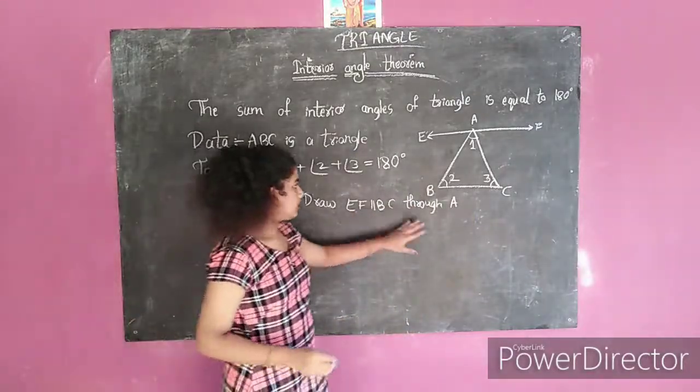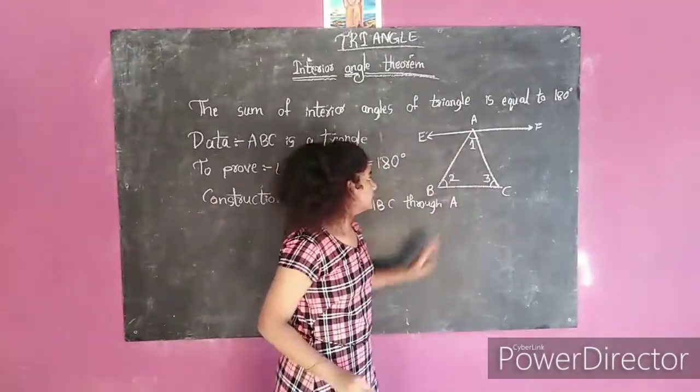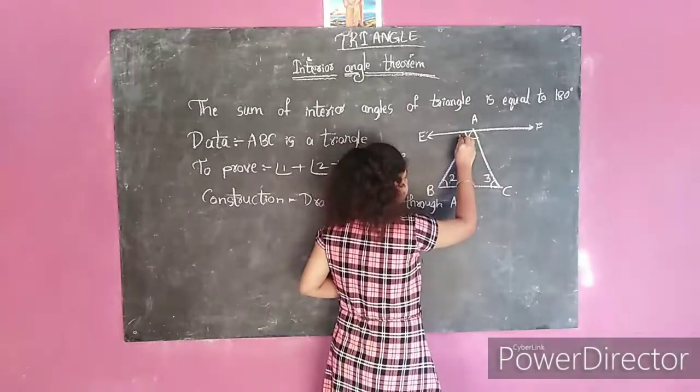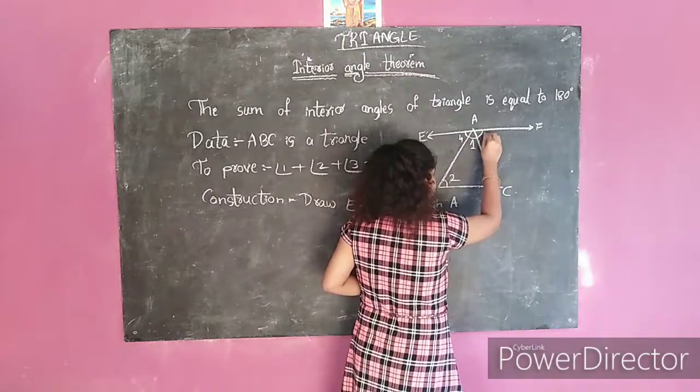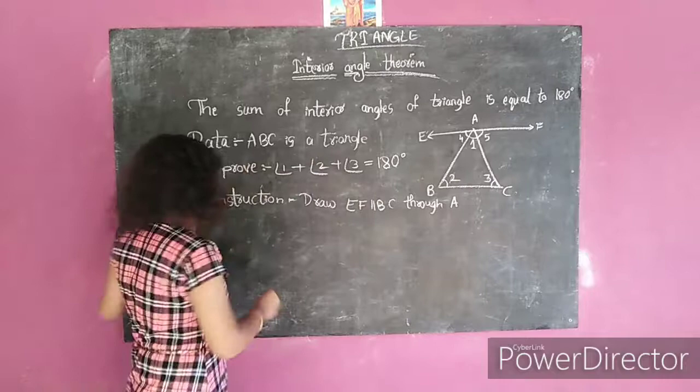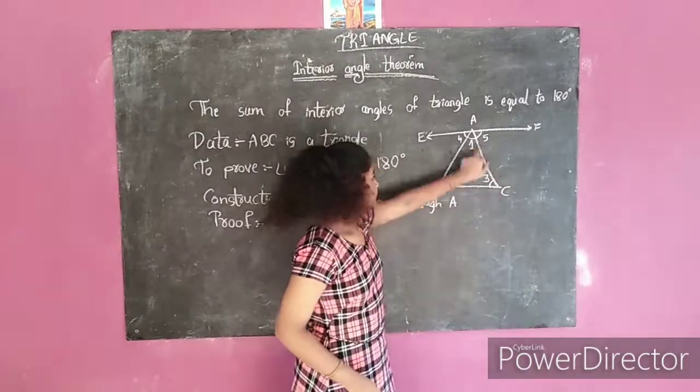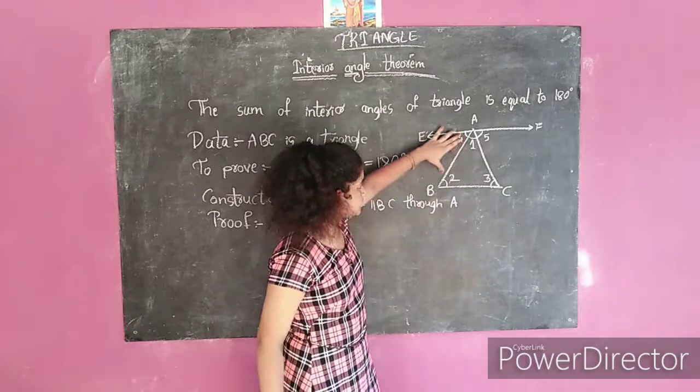Draw EF parallel to BC means these two lines are parallel. We will take this angle as angle 4 and this angle as angle 5. Now we will start the proof. If EF is parallel to BC, then AB acts as a transversal.